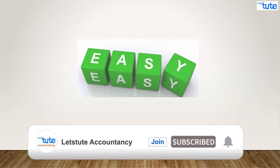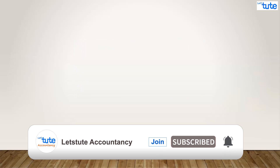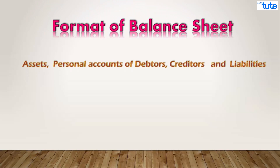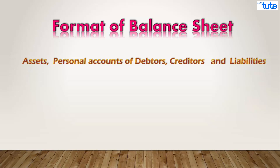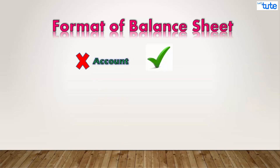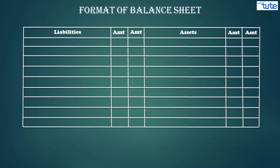Now let's move on to the last format — the balance sheet. This too is exactly the same as studied earlier. At this stage, only accounts pertaining to assets and personal accounts of debtors, creditors, and liabilities remain in the trial balance. All these remaining accounts are shown in a statement known as the balance sheet. The balance sheet is not an account — it is a statement, as balances are only listed and not transferred. The balance sheet is vertically divided into two sides: the left-hand side shows liabilities and the right-hand side shows assets.